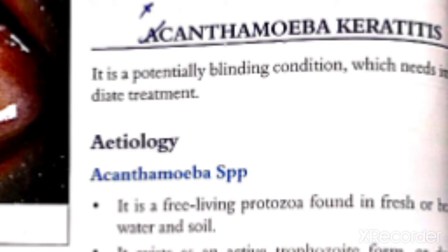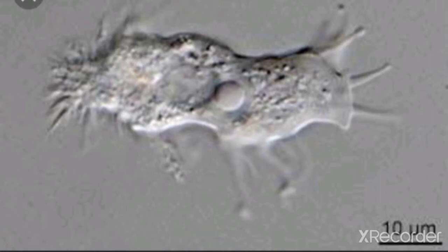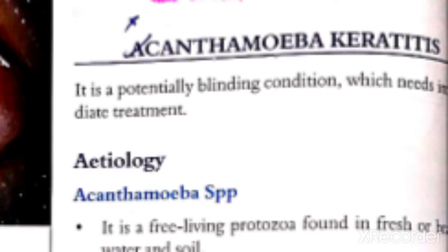Assalamualaikum. Last time we discussed about fungal keratitis, and now we are going to discuss about acanthamoeba keratitis. What is acanthamoeba? It is a parasite — we have studied in Parasitology that this is a parasite. It is also a potentially blinding condition.